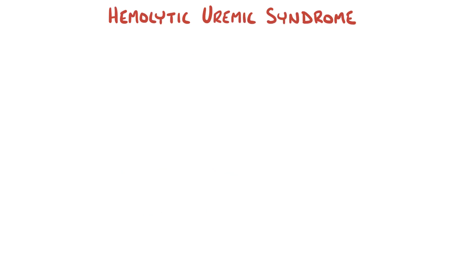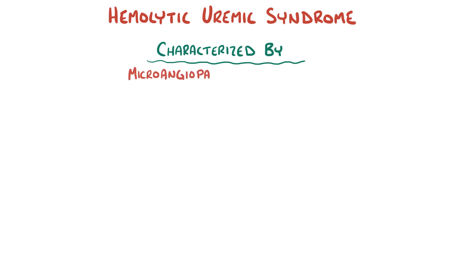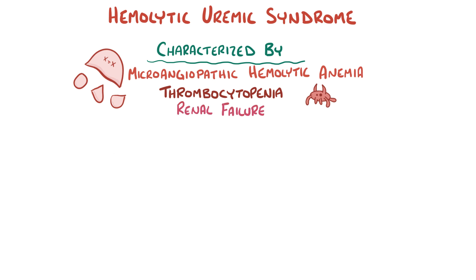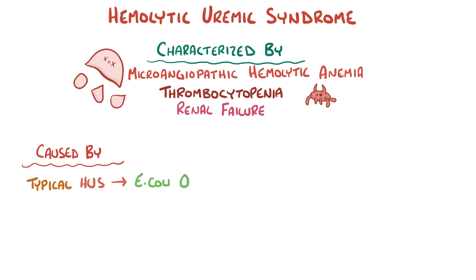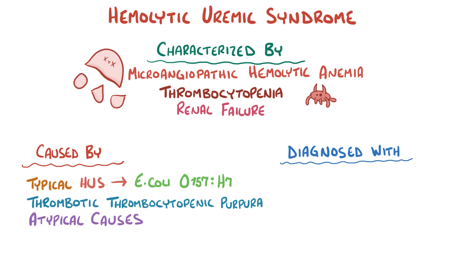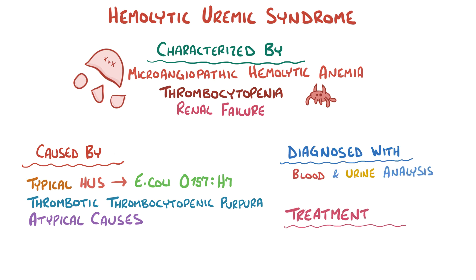As a quick recap: hemolytic uremic syndrome is a disease characterized by microangiopathic hemolytic anemia, thrombocytopenia, and renal failure. Typical hemolytic uremic syndrome is caused by bacteria like E. coli O157:H7, but it's also associated with thrombotic thrombocytopenic purpura, as well as atypical causes. The diagnosis is made by analyzing the blood or urine, and the treatment for typical hemolytic uremic syndrome is supportive.